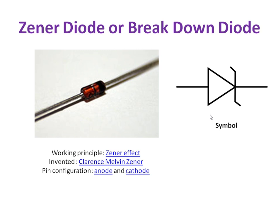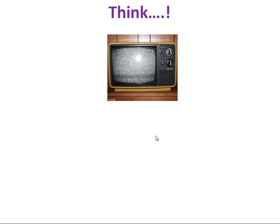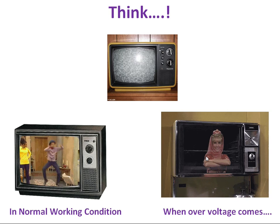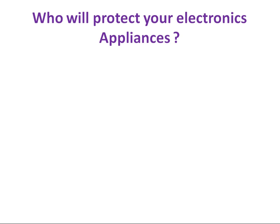Now think, you have a television in your home. In normal working condition, you can watch movies and the images will be in good quality. Nothing will happen. But what happens when over voltage comes? If over voltage comes, there will be a sudden explosion on your television. So how will you protect your electronic appliances from over voltages?